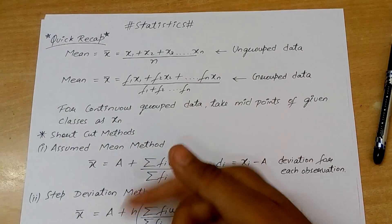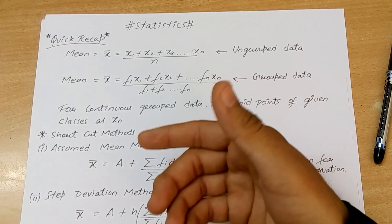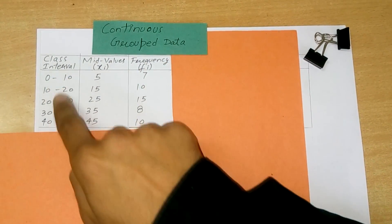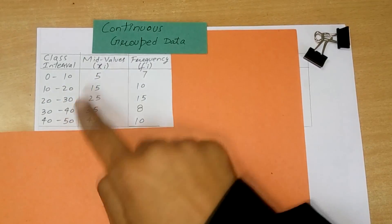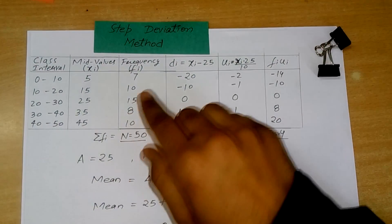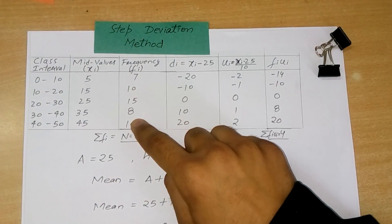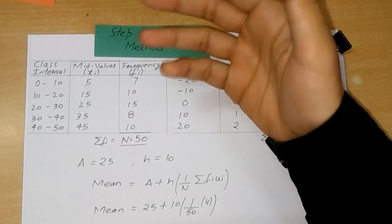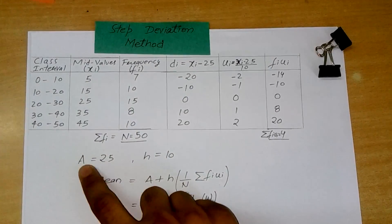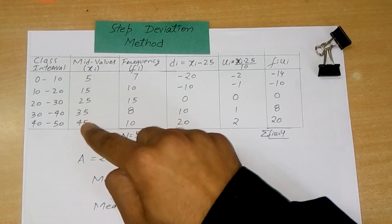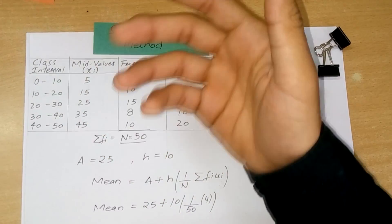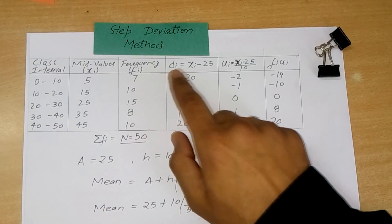For a clearer understanding, we'll take an example with continuous grouped data. For these class intervals, we take mid values of each one of them. Since we have to learn the step deviation method, the calculations are given. In the step deviation method — a shortcut to calculate the mean very fast — we calculate the value of d_i. First, we take 'a' as the mid value of the observations, because the mid value makes the calculation easier. Then we calculate d_i which is x_i minus a.